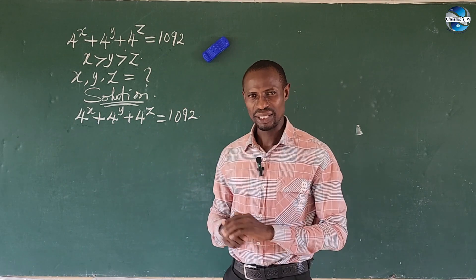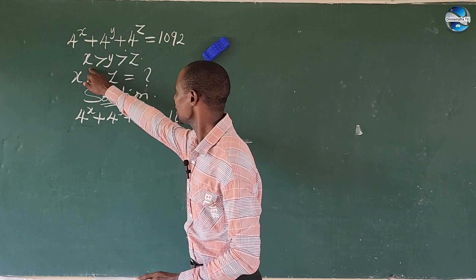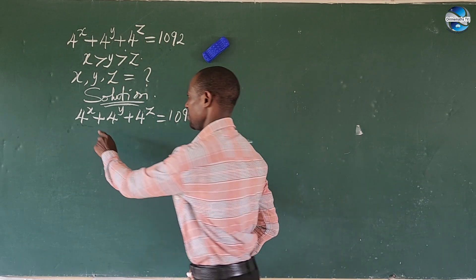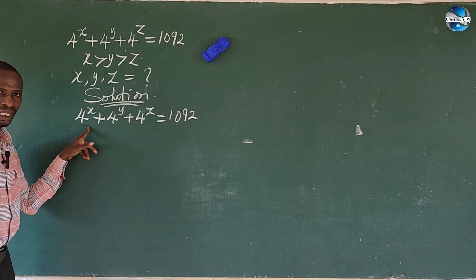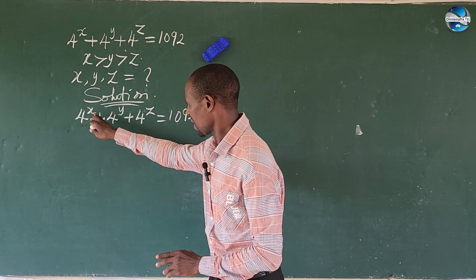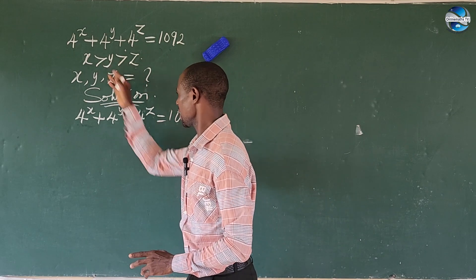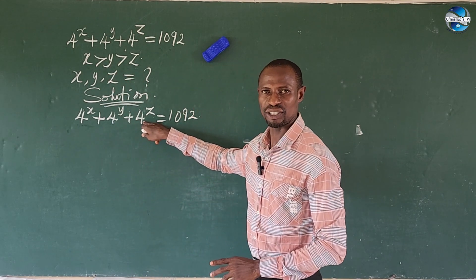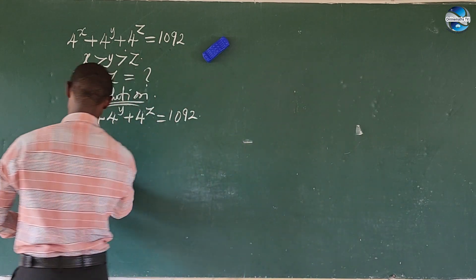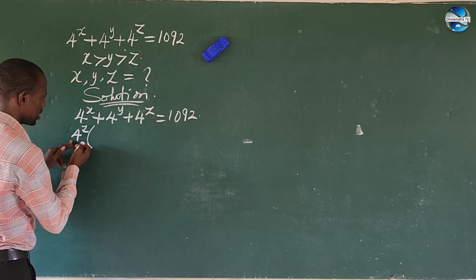Which one do we factor out? We must put into consideration the condition that x is greater than y and y is greater than z. So if I start the factorization with x, it's going to make x the least value. Based on this condition, I will start the factorization with 4 to the power of z. So let's factor out 4 to the power of z here.